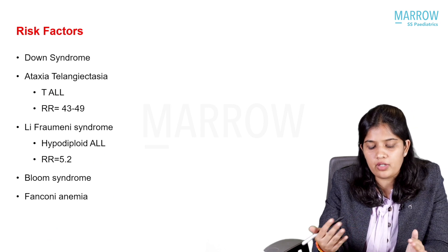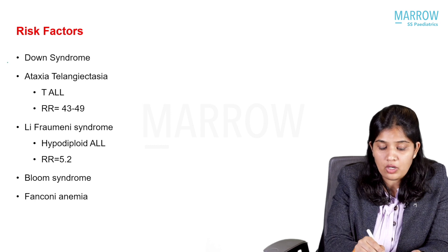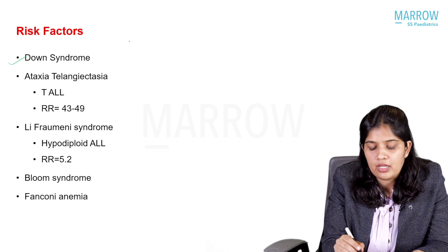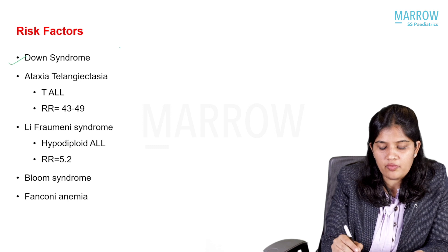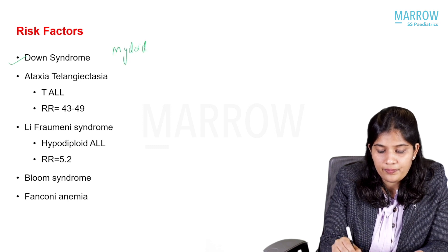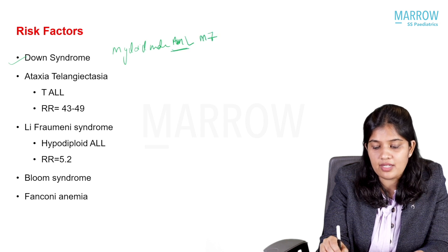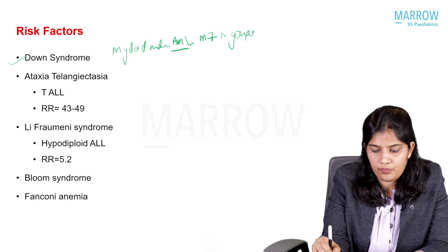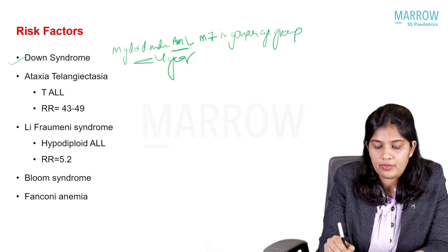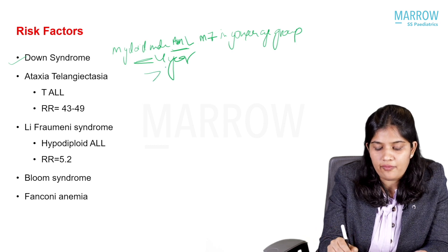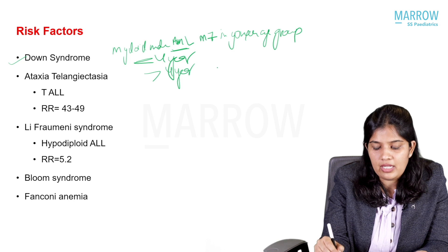Regarding risk factors for developing these malignancies: patients with Down syndrome are at high risk of developing acute leukemia compared to the general population, and are more at risk of myeloid malignancies — specifically AML M7 in younger age groups. In children less than four years of age, Down syndrome confers higher risk of AML compared to ALL. Beyond four years of age, the risk of AML and ALL is almost equal.